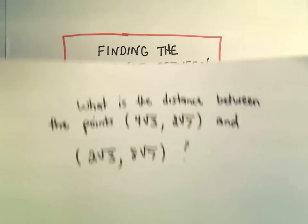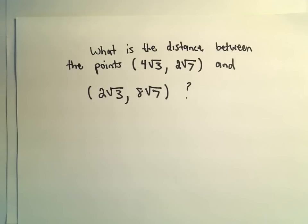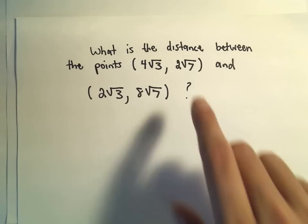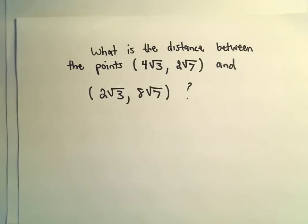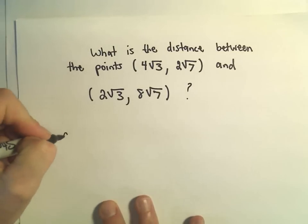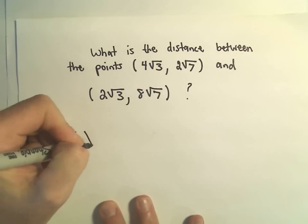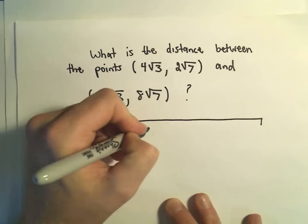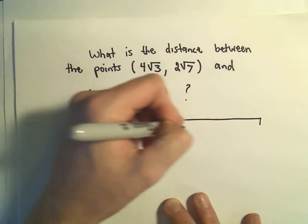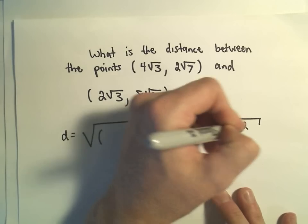In this case, we want to know what's the distance between these points: 4 root 3, 2 root 7, and 2 root 3, 8 root 7. Just a little tedious here because we have some square roots floating around, but we take the square root, squared, squared, there's a minus in between.